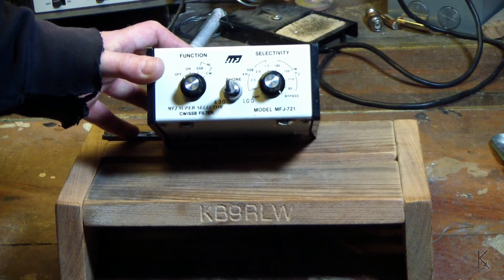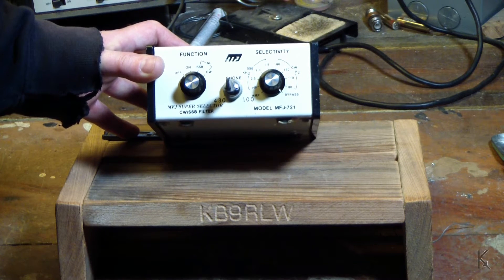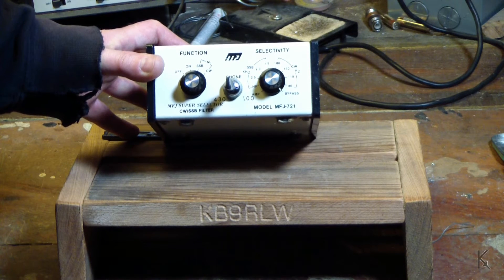It's a variable bandpass audio filter designed to help with filtering single sideband and CW signals in the audio stream coming out of the radio. So, before DSP, this was the way you did it. If your radio didn't have a narrow filter, you'd filter at the audio stage.